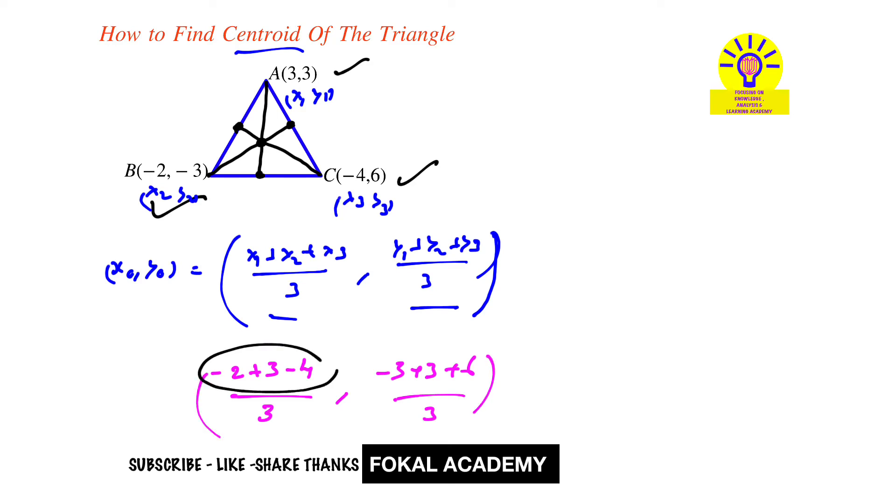By simplifying this we get minus 6 plus 3, minus 3 cancel, becomes 6 by 3. So that's equal to minus 1, comma 2. And this is the centroid of the given triangle.